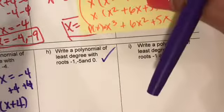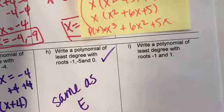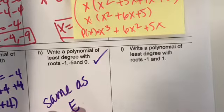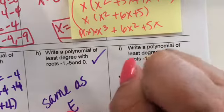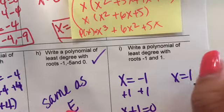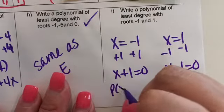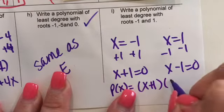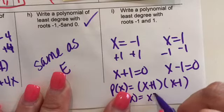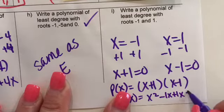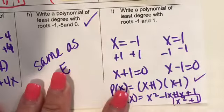Example I: X equals negative one and X equals one. Add one to get X plus one, and subtract one to get X minus one. So P of X equals X plus one times X minus one. Distributing gives X squared minus one. Alright, see you in class!